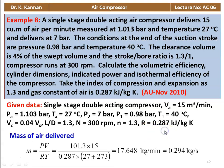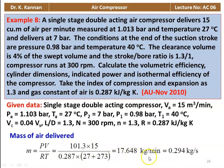Mass of air delivered: M equal to PV by R into T. So 101.3 into 15 divided by 0.287 into (27 plus 273) equals 17.648 kilograms per minute, which is also equal to 0.294 kilograms per second.